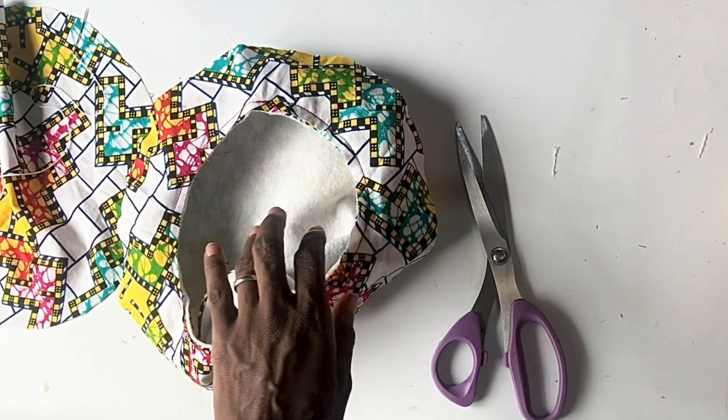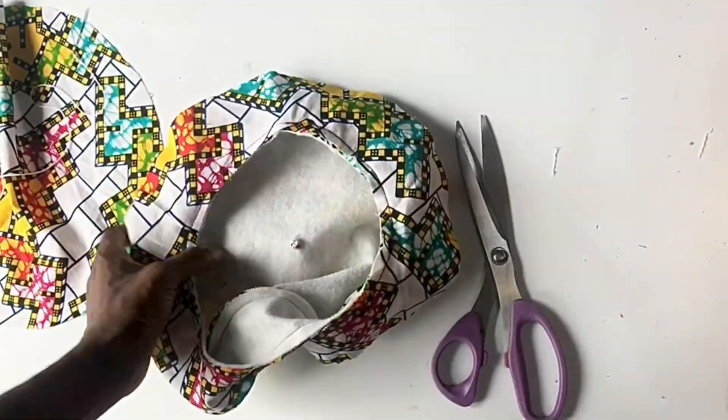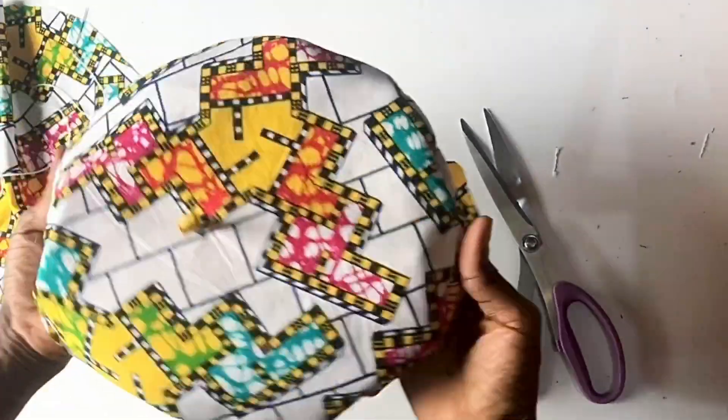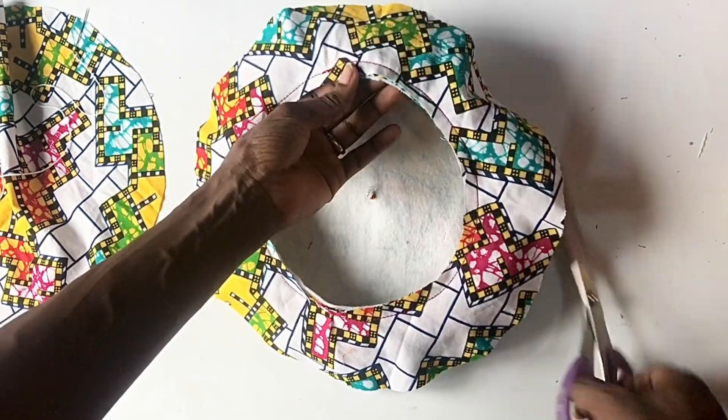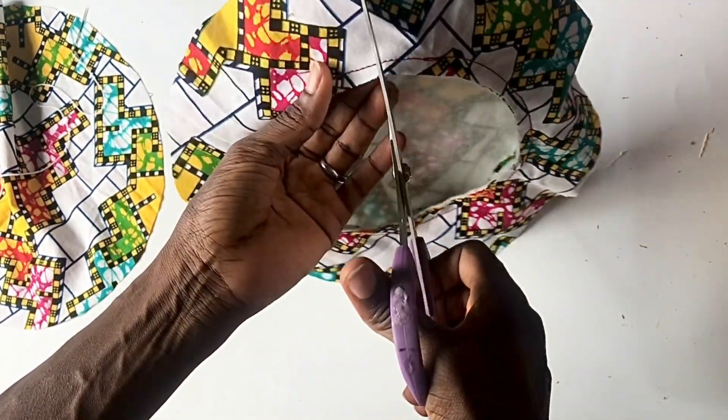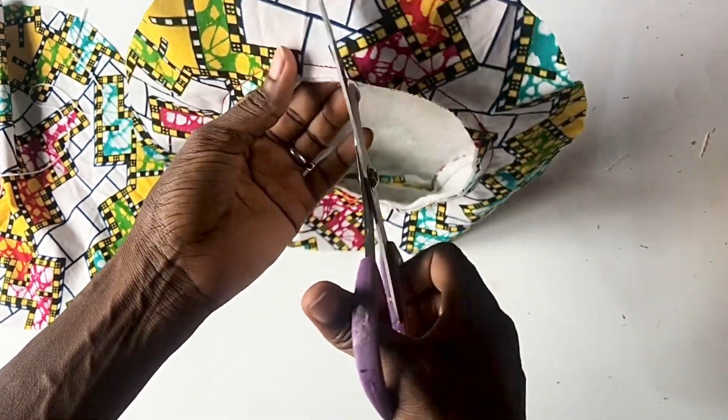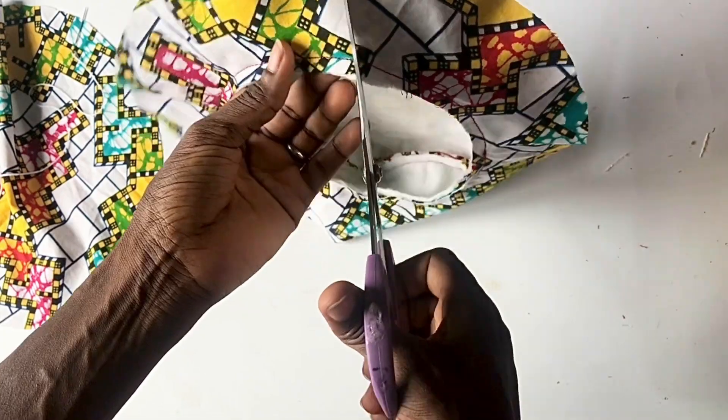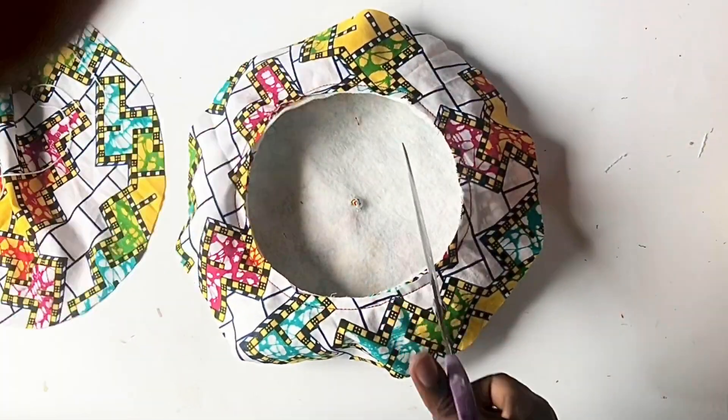After doing that I used my lighter to burn it just to give it a clean finish. Now that we've attached the spike and attached the lining, what we are going to do next is to make tiny cuts at the edge that we just sewed, so that it would be easy for us to turn the lining inside and it won't drag.